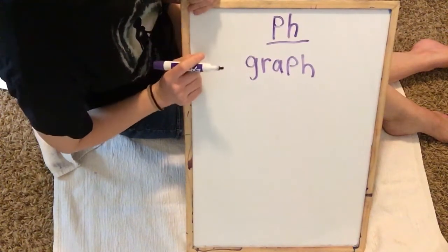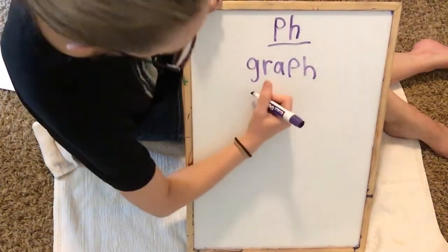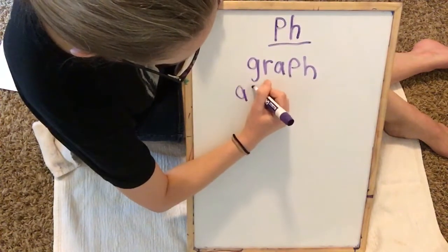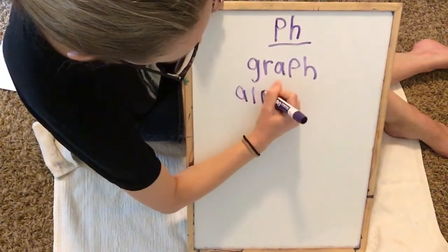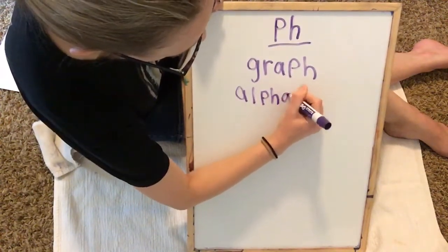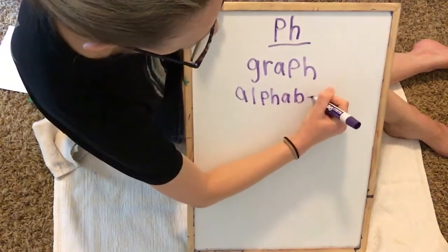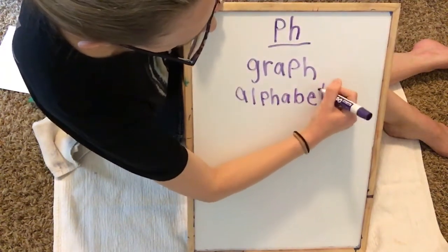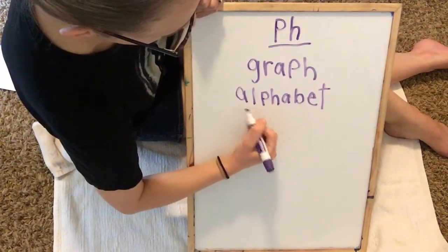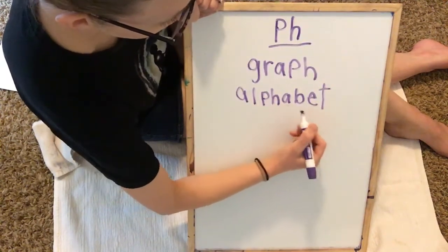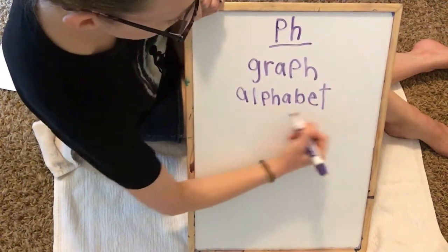All right, here's a long one. Alphabet. A, L, F, A, B, E, T. A, L, P, H, A, B, E, T. Alphabet.